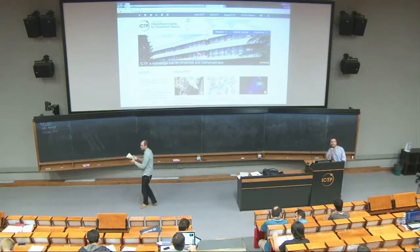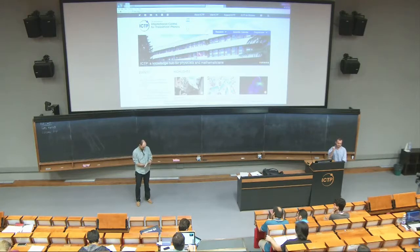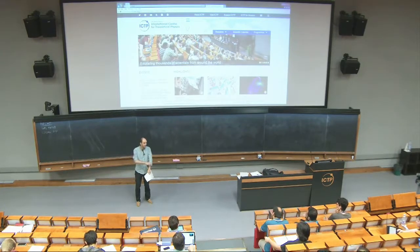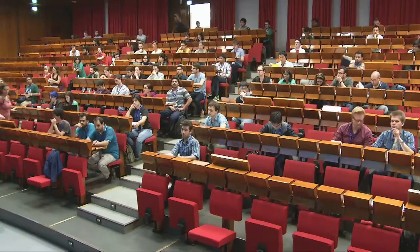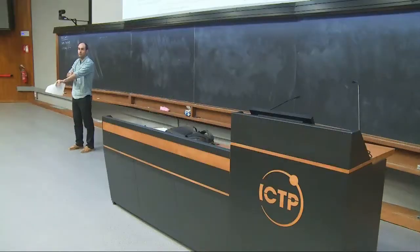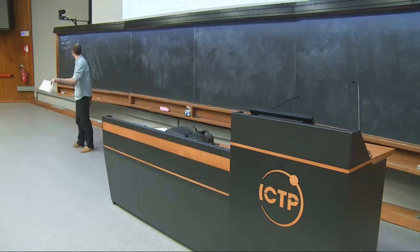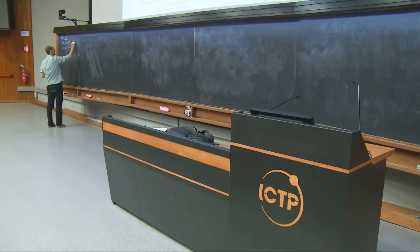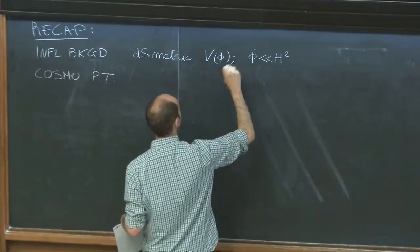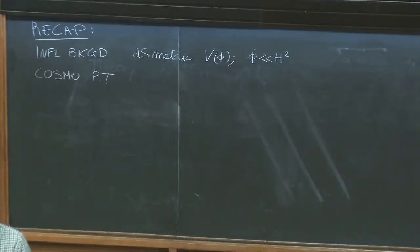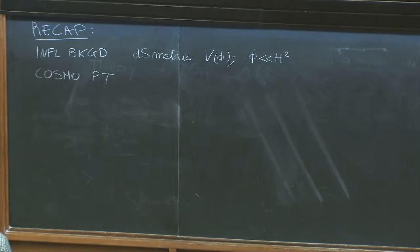We can start with the third lecture by Enrico Payer about inflation. Good afternoon, everyone. We're going to pick up from where we left — we spent some time understanding the inflationary background, which is pretty much a quasi-de Sitter background as far as gravity is concerned and as far as the scalar field is concerned. So this was pretty much the de Sitter metric, and then a scalar field that moves slowly.